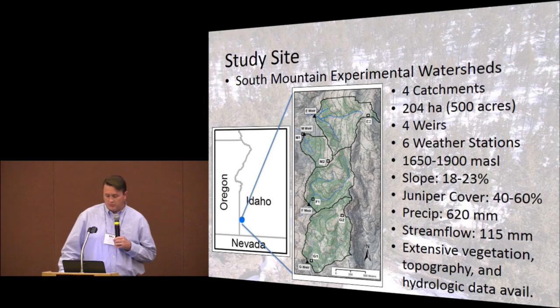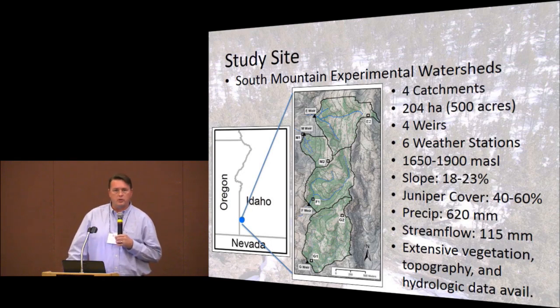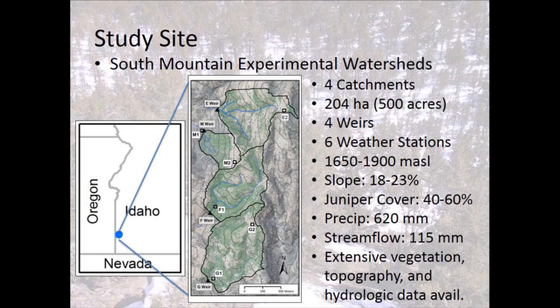The study sites are four watersheds in southwestern Idaho, right along the Oregon border. Each watershed is about 50 hectares in size. These sites are currently dominated by juniper vegetation, with about 40 to 60 percent juniper cover on average. There are weirs at each outlet monitoring stream flow, and six weather stations collecting a suite of meteorological variables hourly. Slopes are about 20 percent, precipitation exceeds 600 millimeters with most falling as snow, and about 20 percent of that water leaves the catchments as stream flow.